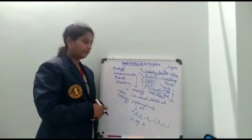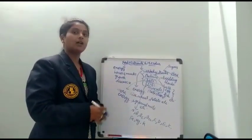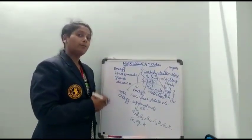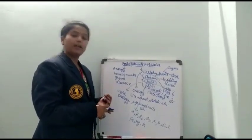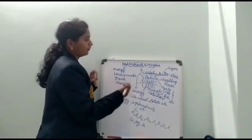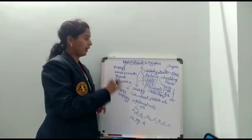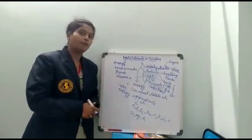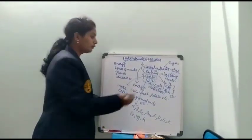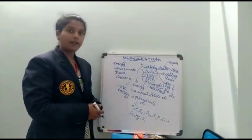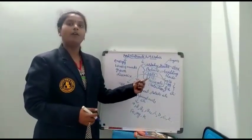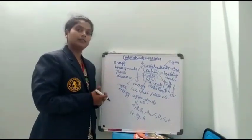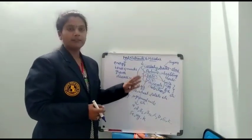In which food items can we see vitamins and minerals? All kinds of vegetables and fruits — especially fruits like orange, apple, papaya. If you observe, when you fall sick and go to a doctor, he advises you to take fruits because they contain vitamins and minerals which help you get well soon.